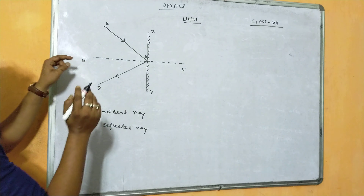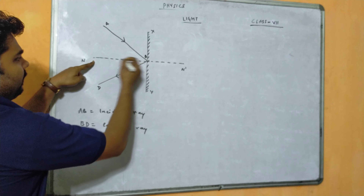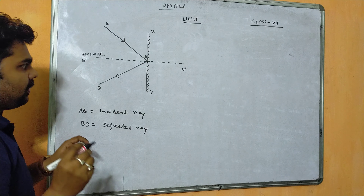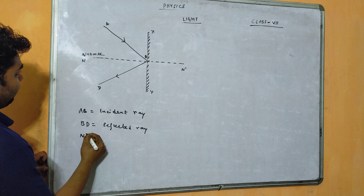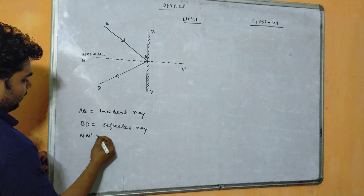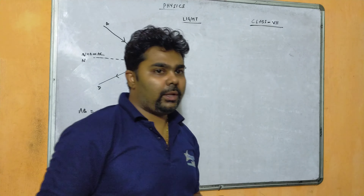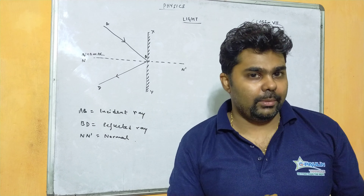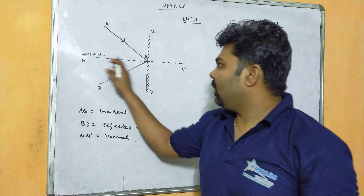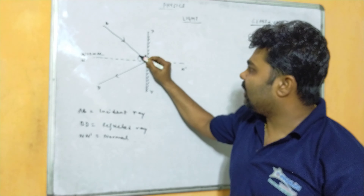If we draw a normal passing through point B — what was point B? The point at which the incident ray strikes the plane mirror is called the point of incidence. When we draw a perpendicular line passing through point B, that is called the normal. A normal is a perpendicular line passing through the point of incidence. Here the normal is N.